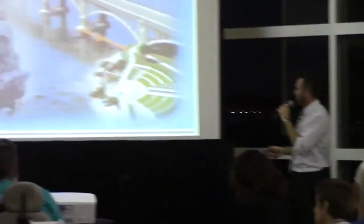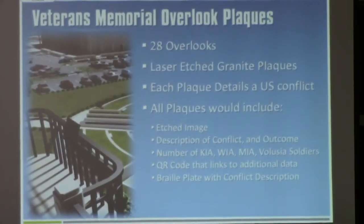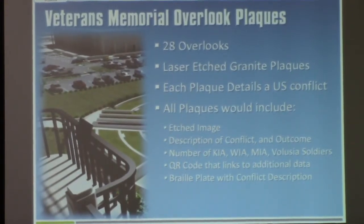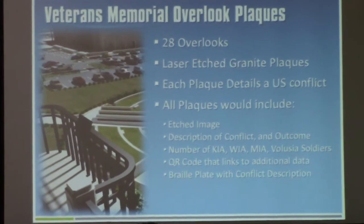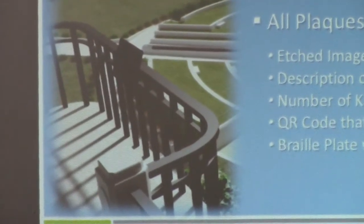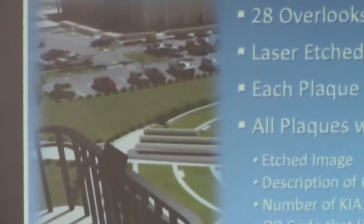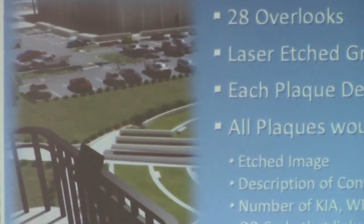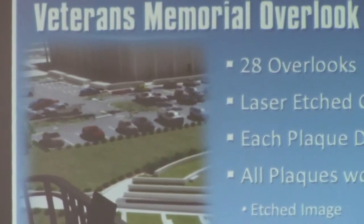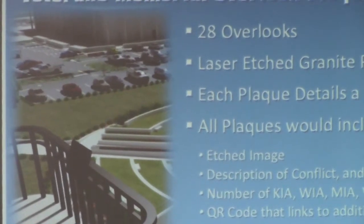I'm just going to walk through some of those elements real quick. The overlook plaques are part of the bridge structure — a great idea that came out of that committee. They're laser-etched granite plaques; there's a sample on the far left showing the laser-etching process. It essentially takes a piece of granite and dials in photography, so you get great imagery on those granite slates. There are 28 overlooks and each will have one of those plaques. They work in chronological order, starting with the American Revolution and working all the way through modern times across the bridge. We're going to leave a couple of spots open for future conflicts as they arise.